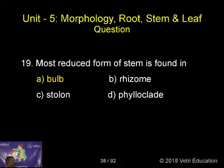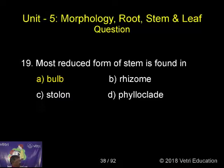Most reduced form of stem is found in: A. Bulb, B. Rhizome, C. Stolon, D. Phylloclade. The correct answer is A.